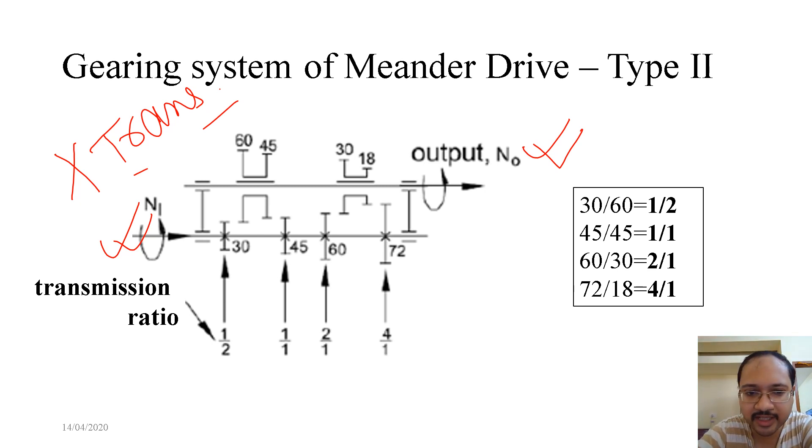How do we do that? If this set of sliding cluster or the sliding gear is meshed to the left, 30 will mesh with 60, we get 1/2. Then 45 will mesh with 45, if we shift to the right we get 1/1. Similarly, 60 by 30 we get 2/1, 72 by 18 we get 4/1.